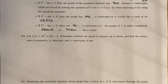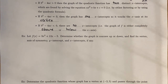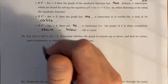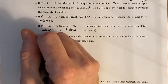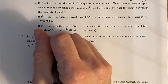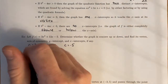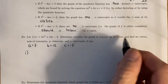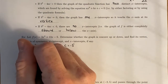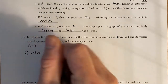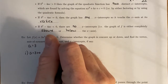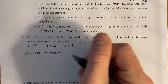Let's put this into practice. Say you have the function 3x squared plus 12x minus 5. We want to first determine if the graph is concave up or down. In this case, A is equal to 3, B is equal to 12, and C is equal to negative 5. Since A is positive, the graph is concave up — it looks like a smiley face.